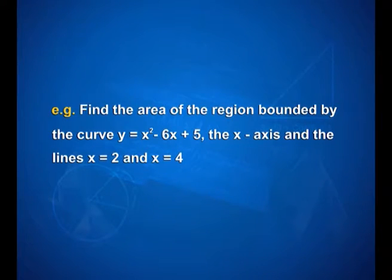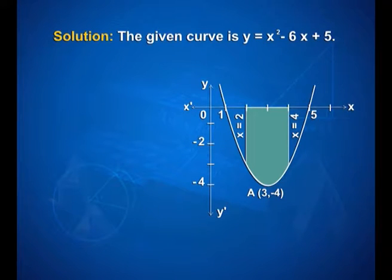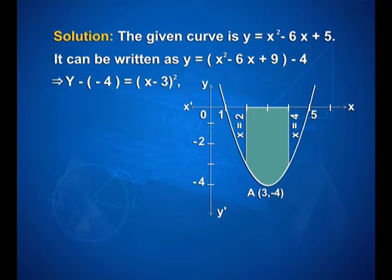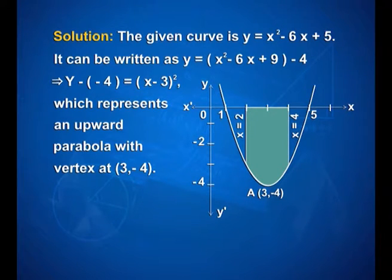Find the area of the region bounded by the curve y is equal to x square minus 6x plus 5, the x axis, and the lines x is equal to 2 and x is equal to 4. The given curve y is equal to x square minus 6x plus 5 can be written as y is equal to x square minus 6x plus 9 minus 4, where 5 is written as 9 minus 4. So y plus 4 is equal to (x minus 3) whole square, which represents an upward parabola with vertex at (3, minus 4).